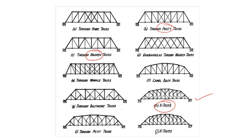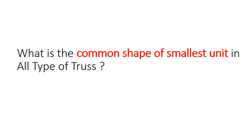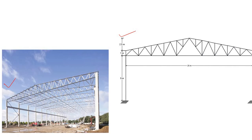Now, if I ask you: what is the common shape of the smallest unit in all types of truss, can you answer? Let's go back and look again. Here is the roof truss, and you can see that the smallest unit of this truss is triangular in shape.